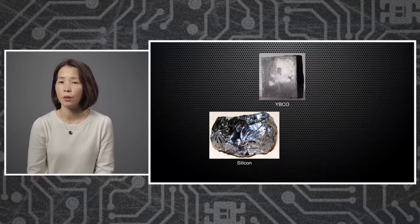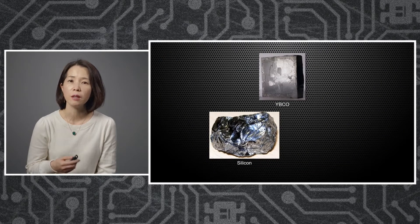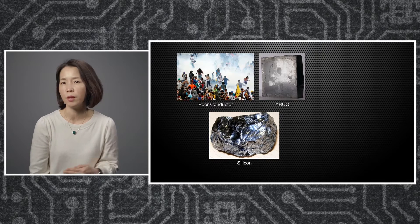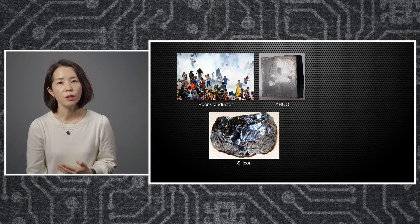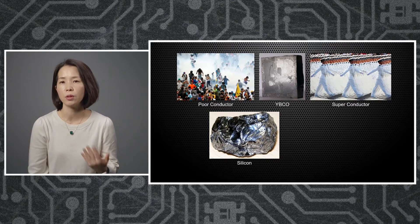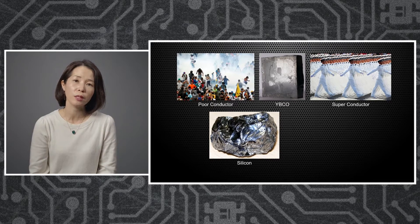The material YBCO shown at the top looks dull because in the room temperature condition, the electrons form this chaotic state. We call it bad metal. However, you take the same material and cool it down, down, down to minus 300 degrees Fahrenheit. You reach this completely coherent, very consistent state, which can carry current without resistance. We call this superconductor.